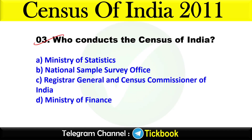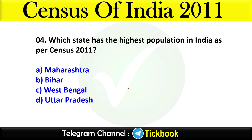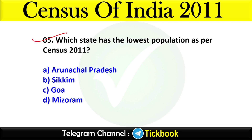Question three: Who conducts the census of India? Option number C is the right answer: Registrar General and Census Commissioner of India. Question four: Which state has the highest population in India as per Census 2011? Option number D is the right answer: Uttar Pradesh.